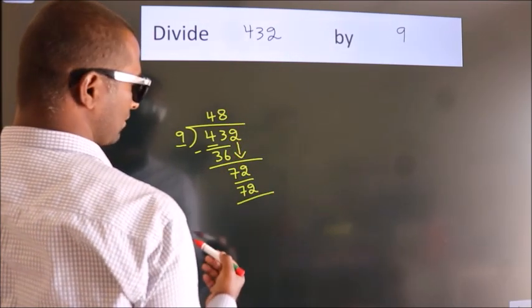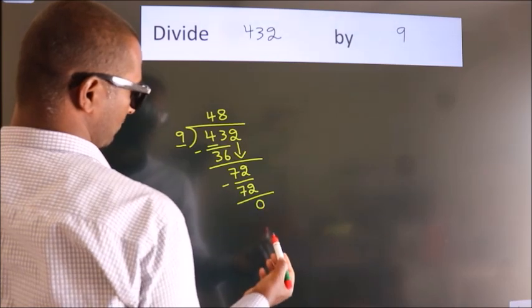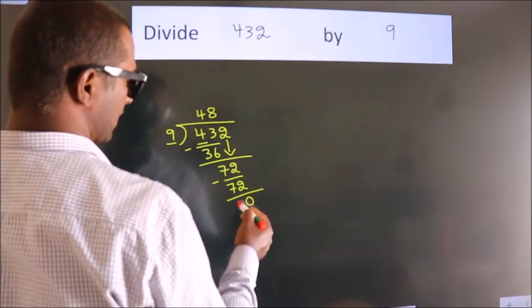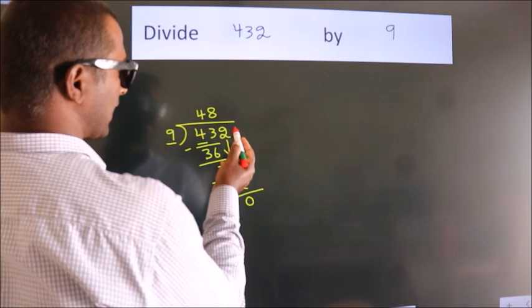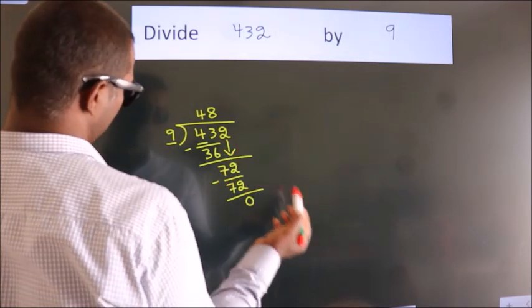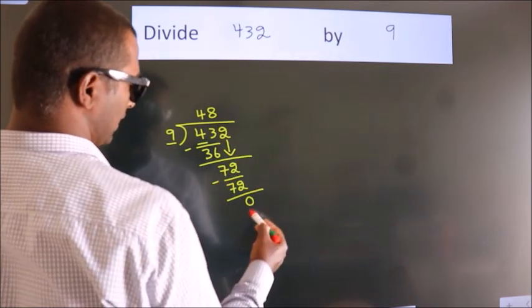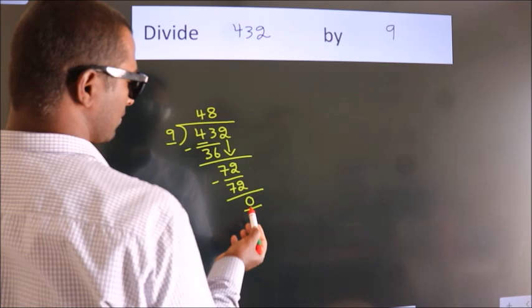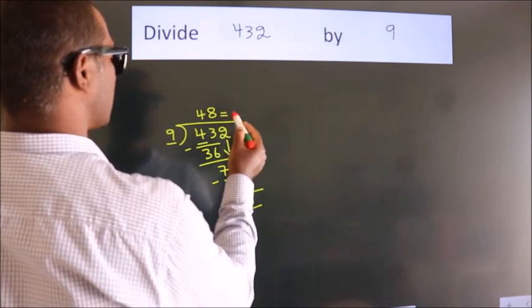Now we subtract. We get 0. After this, no more numbers to bring it down and we got remainder 0. So, this is our quotient.